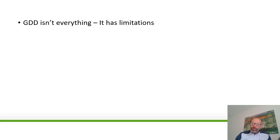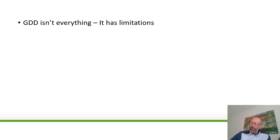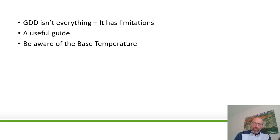In conclusion, growth degree days are a really useful tool but they're not everything — they have limitations. They're a really useful guide to give you an indication of your spray windows and how to alter those windows to get the very best out of products. We're trying to improve on some of those limitations with our improved modelling, but they're not perfect — they are, however, a good guide. Be very aware of base temperature: I hear a lot of people talking about 200 growth degree days or some research they've seen, and it's really important that you understand what the base temperature for that study was — without that, the figures are pretty meaningless.